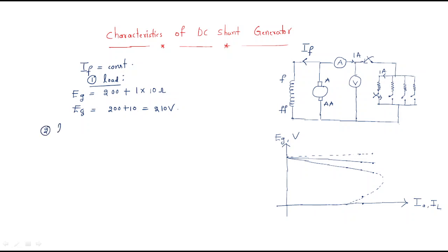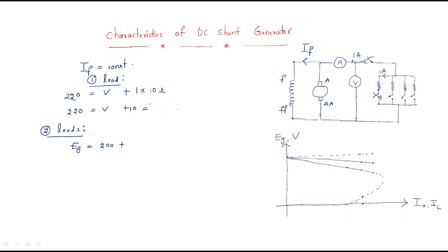Now if we use two loads, the generated EMF (Eg) is fixed at, say, 220 volts. From this, the terminal voltage V equals 220 minus 10 equals 210 volts for one load. So when only one load is used, the terminal voltage is 210 volts.